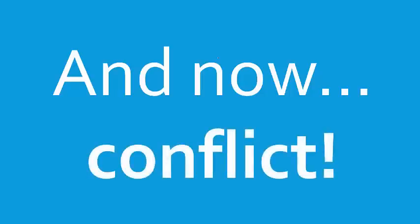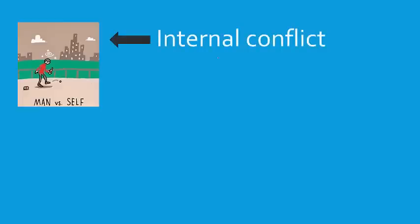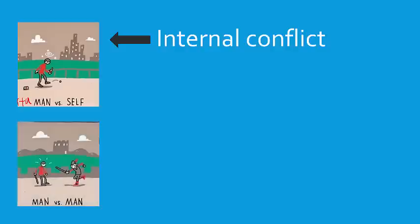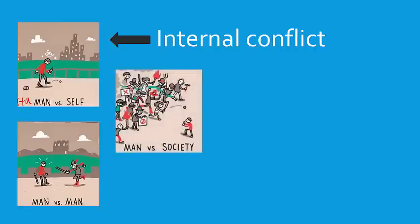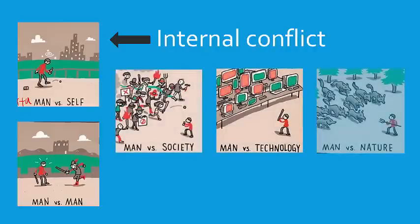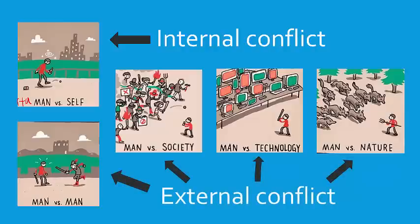Now let's talk about conflict. There are a bunch of different kinds of conflict you can choose to include in your short stories. The first is human versus self — this is an internal conflict because the human is against him or herself internally. We have some external conflicts, such as human versus human, human versus society, human versus technology, and human versus nature. Those are external conflicts — they don't happen internally, but rather outside of the person.